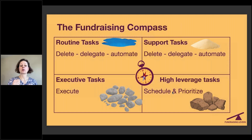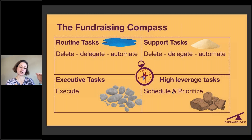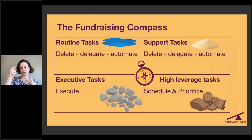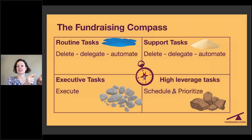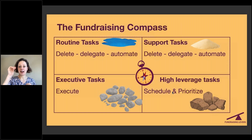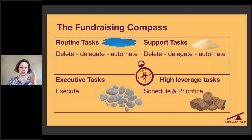Then there are executive tasks — I call them executive tasks because these are the things that you're paid to do, the things in your job description. And then there are the high leverage tasks. These are the rocks that you really need to prioritize. If you're a grant writer thinking, 'if grant writing is my job, then what are the rocks?' — basically, the way you think about them is: what are tasks or activities that make your executive tasks easier? That is the fundraising compass.